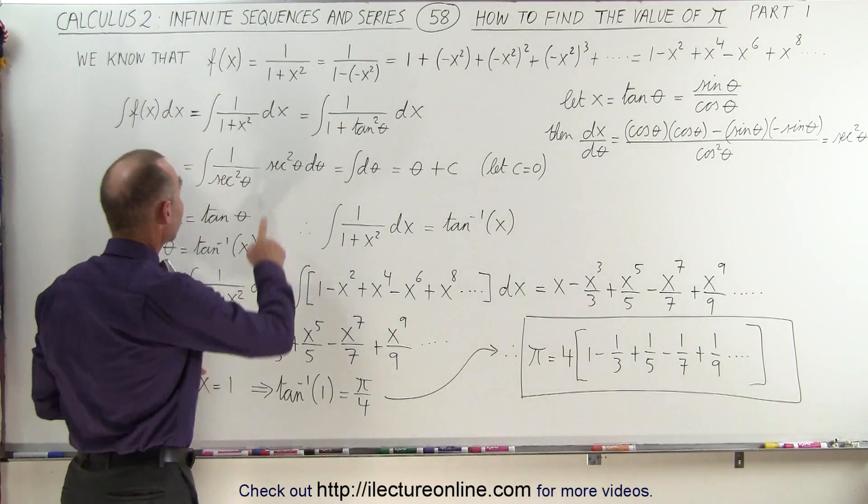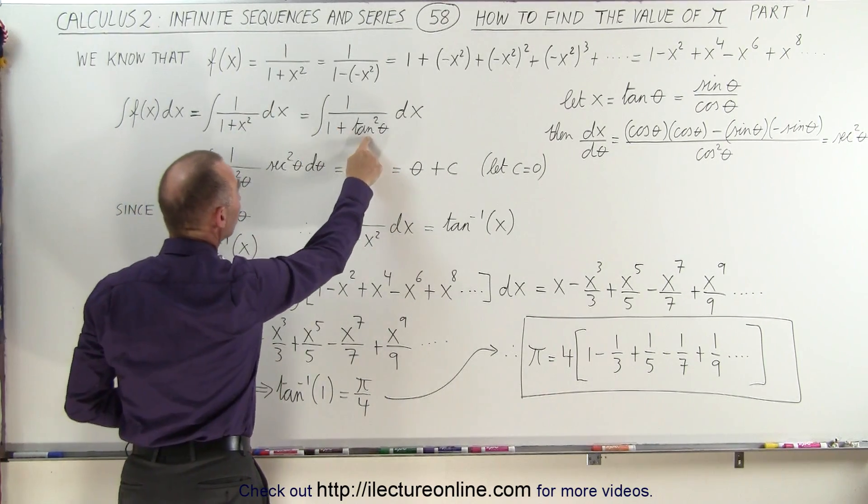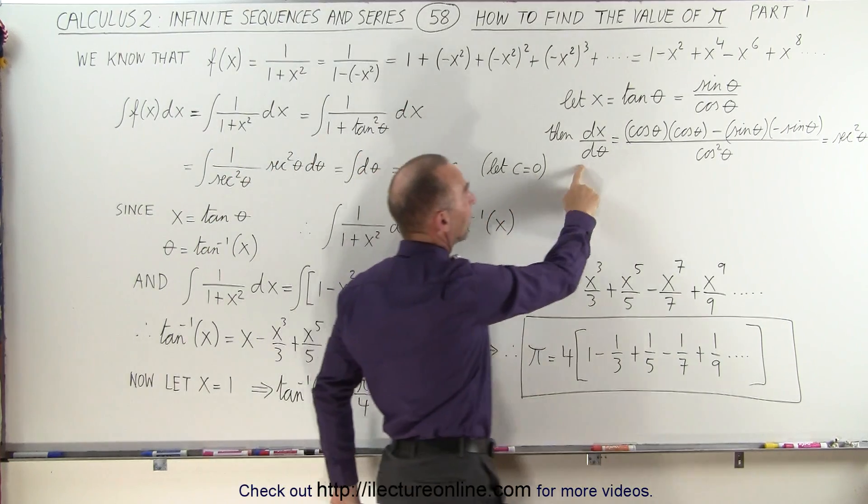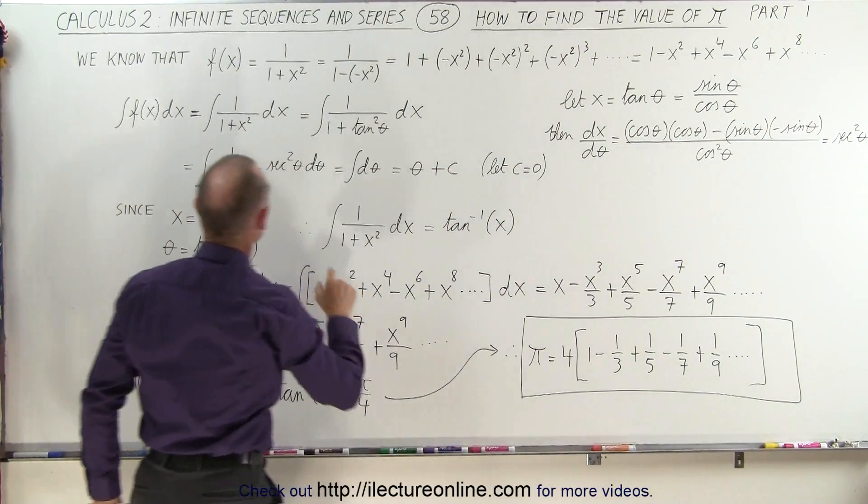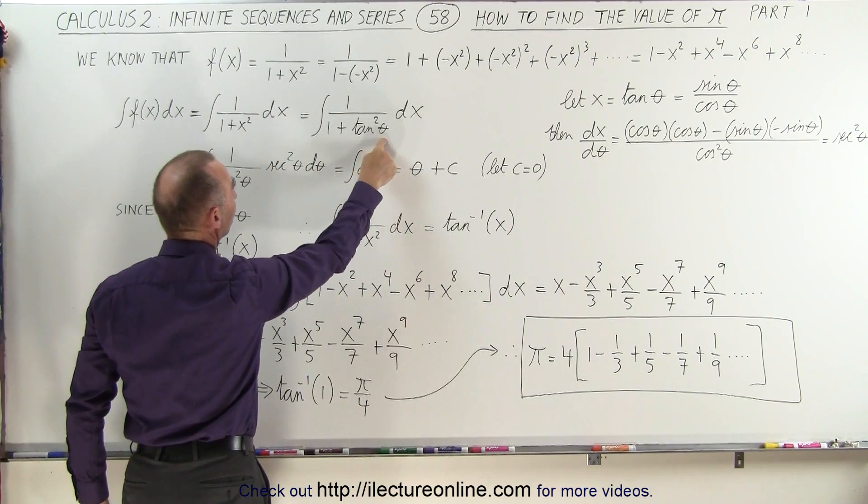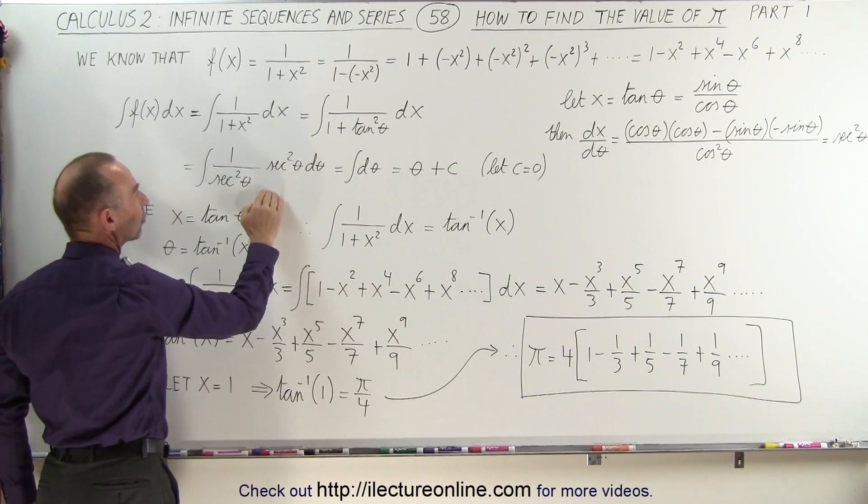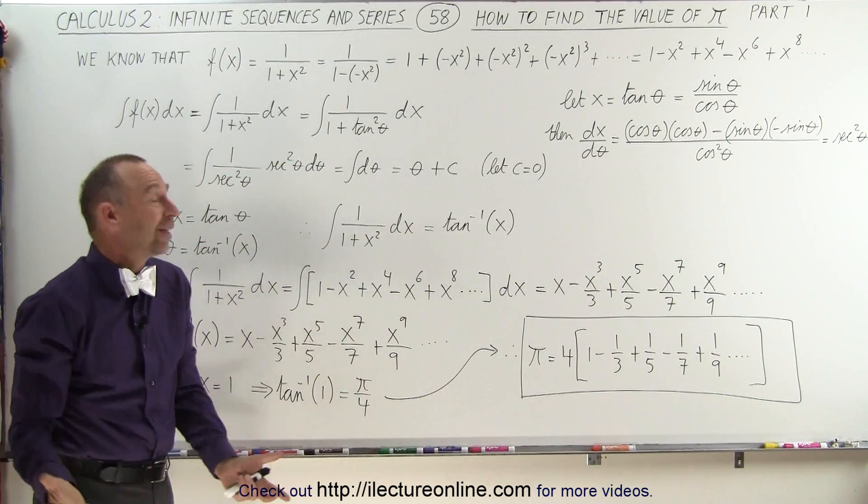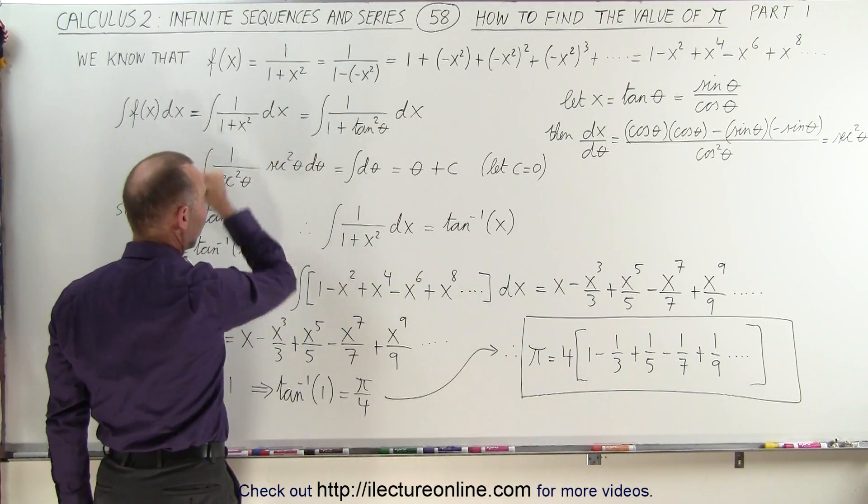When we plug it into our integral, we can write 1 over 1 plus the tangent squared of theta dx, and dx can be written as the secant squared of theta times d theta. We replace dx by the secant squared of theta d theta, and 1 plus tangent squared of theta can be written as the secant squared of theta. We cancel out the secant squares and end up with the integral of d theta. Notice it turns out this is one of the easiest integrals you can imagine, starting with something that looked pretty difficult.